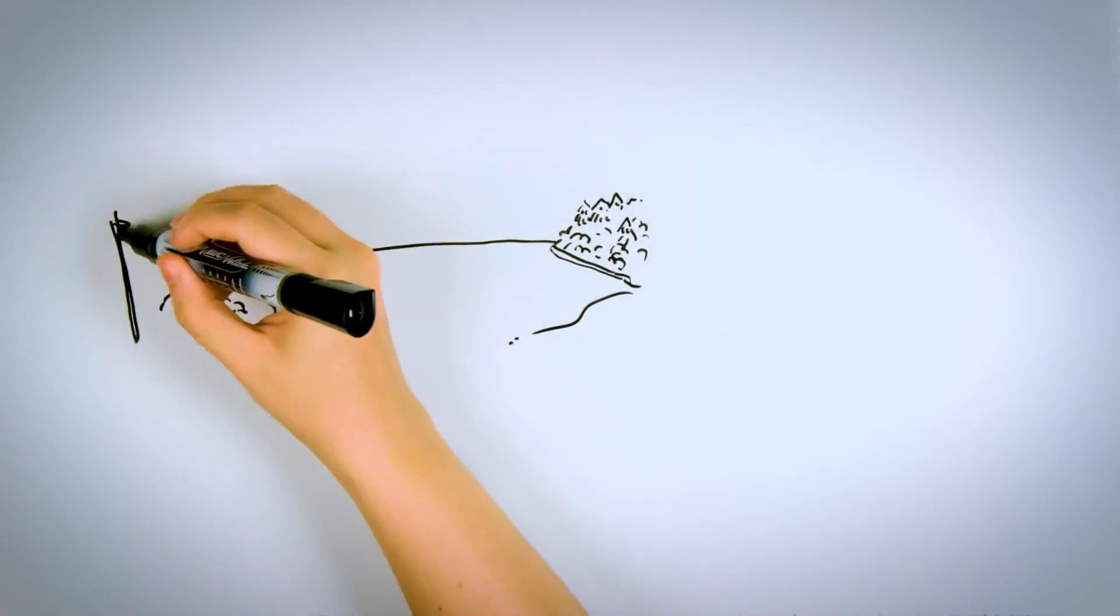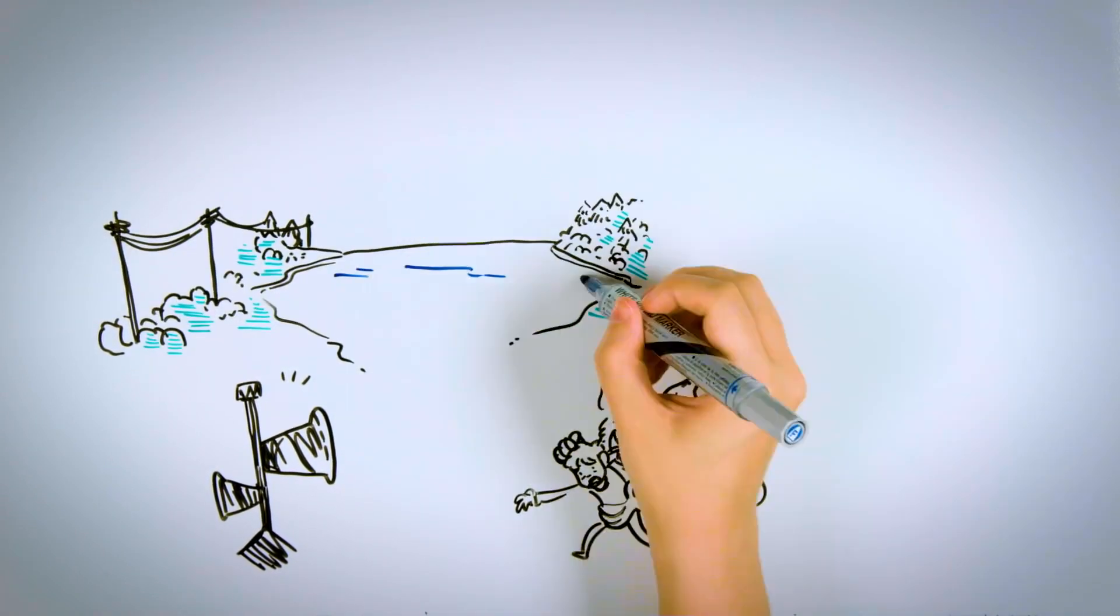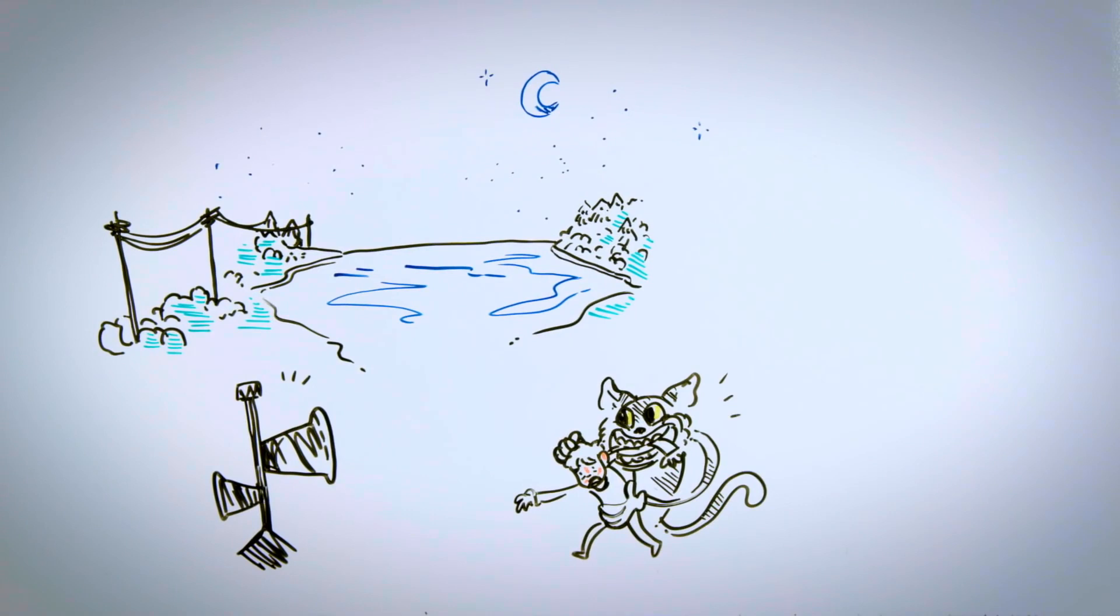But upon arriving to the clearing next to the lake, he discovers what it's all about. Next to a utility pole is Cartoon Cat, with little Timmy in his arms, about to be devoured.